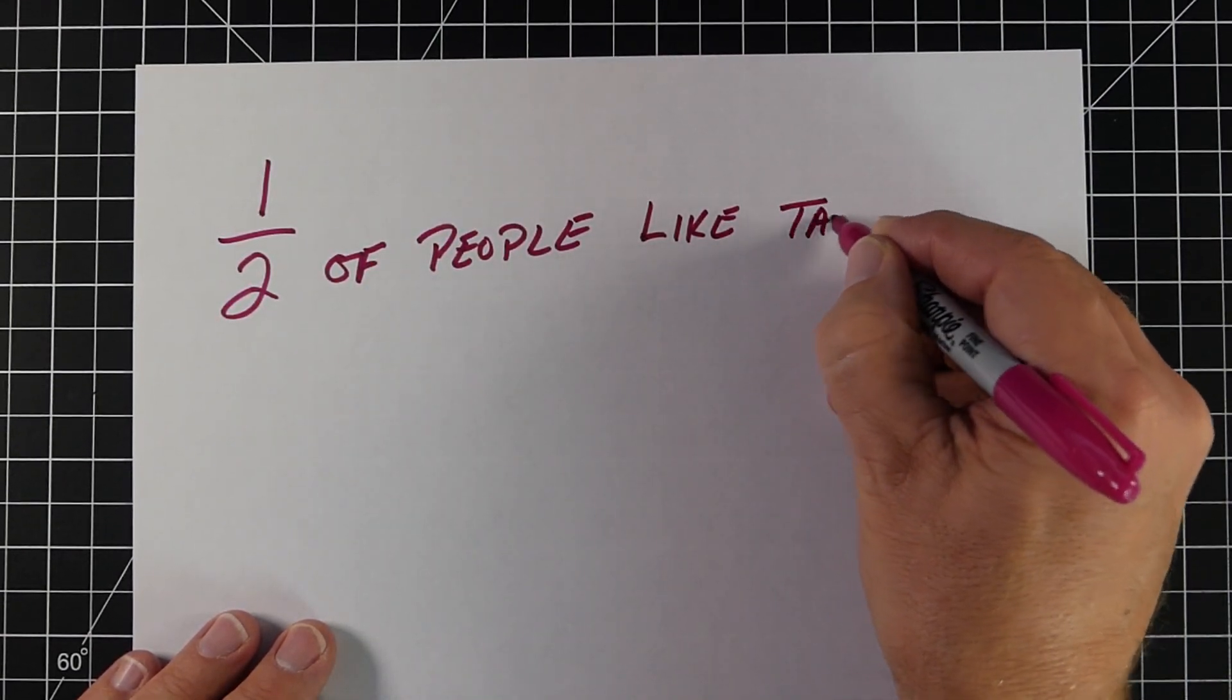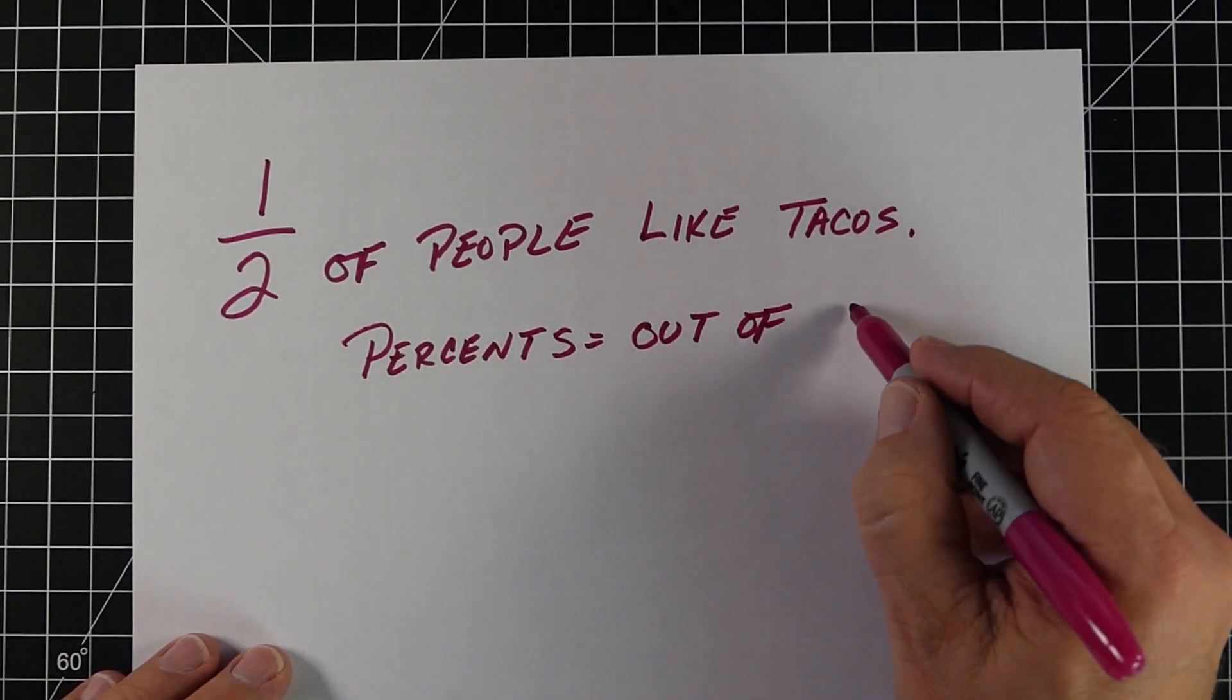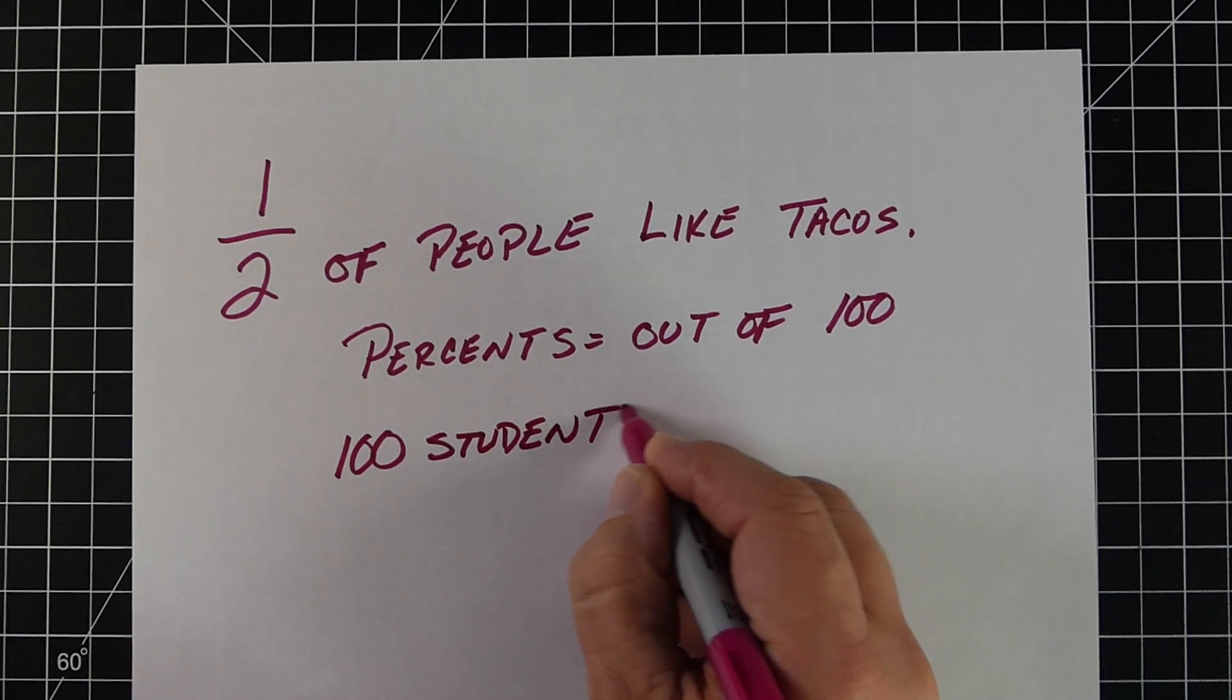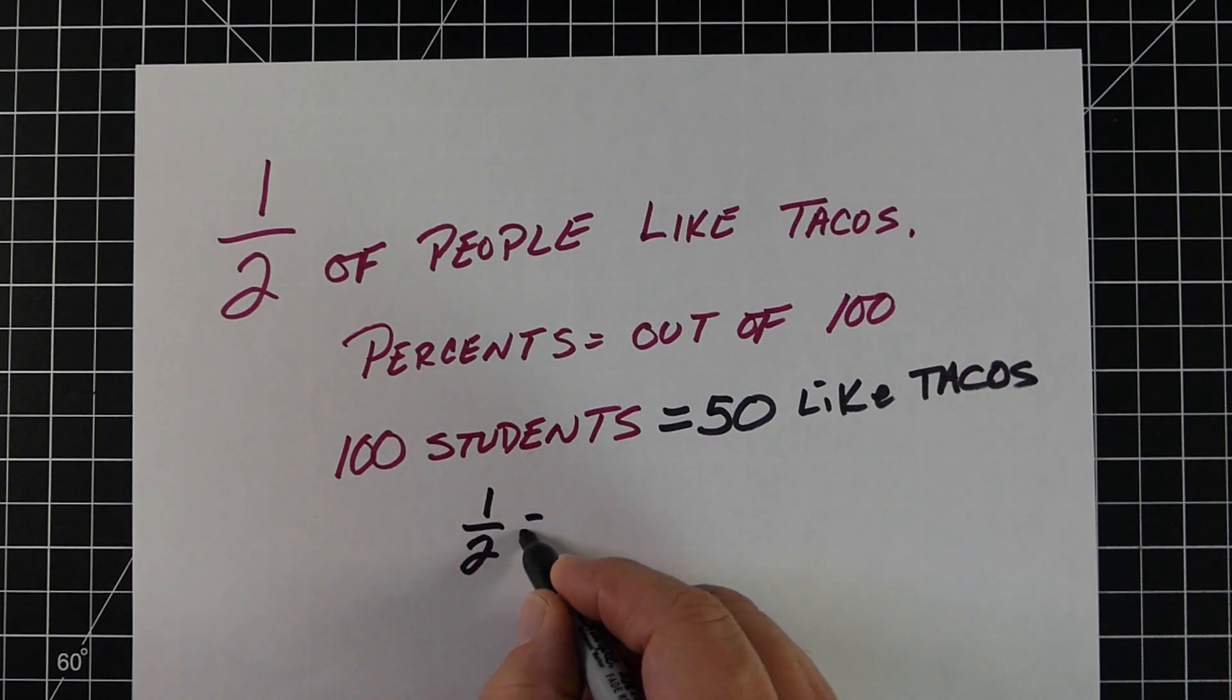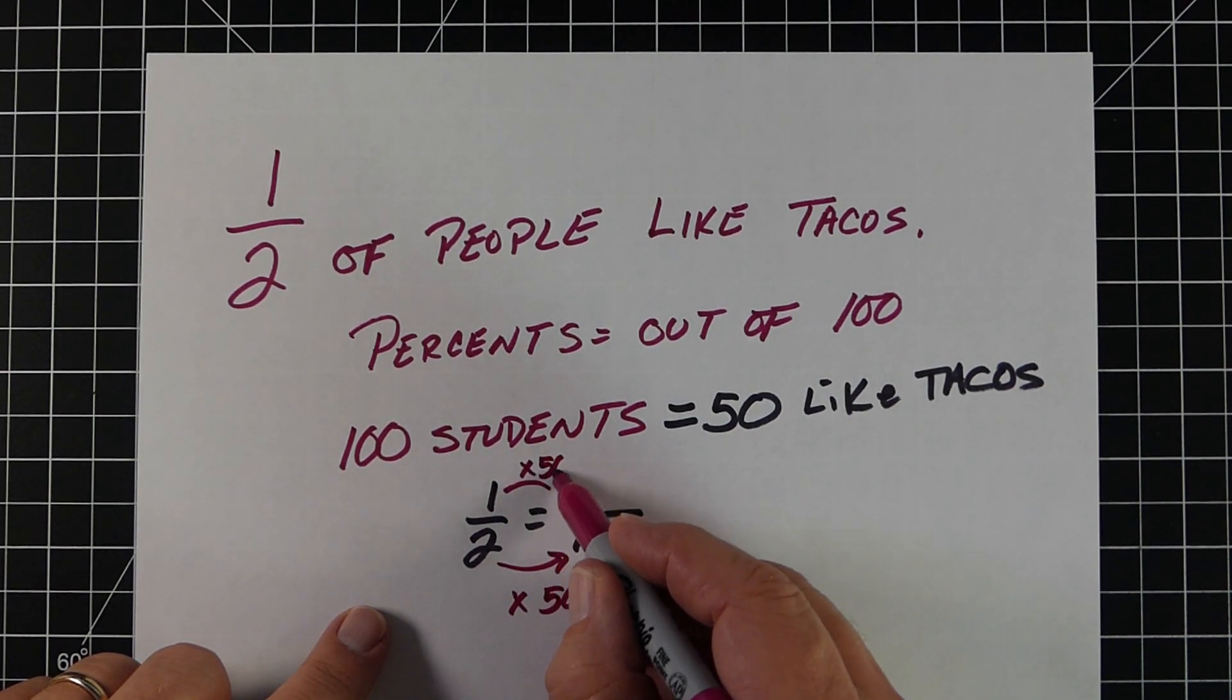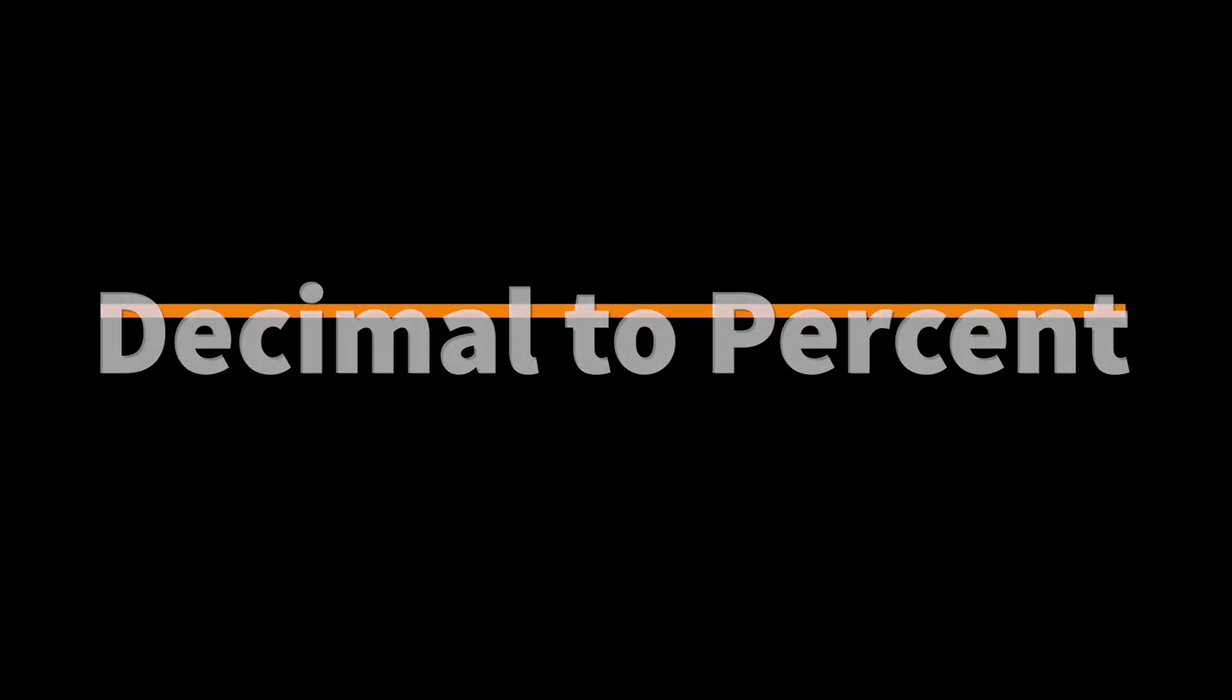For example, if you have - if we know that half the people like tacos, and I can't believe it's only one half, but let's say one half like tacos. What we know is the percent is based out of 100. So out of 100 people, how many would like tacos? If there were 100 students, 50 of the 100 like tacos. If we set this up as a proportion, like one half equals something over 100, you can see we multiplied the 2 by 50 to get 100. So I multiply the top number 1 by 50, and we get 50 that way.